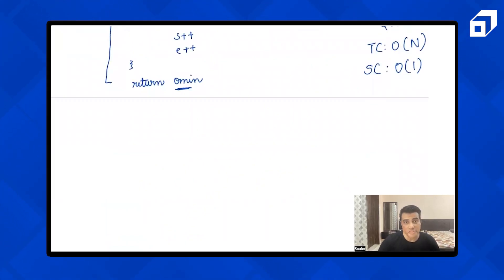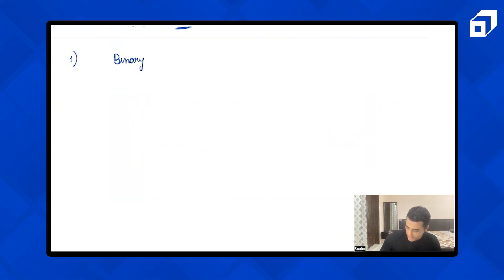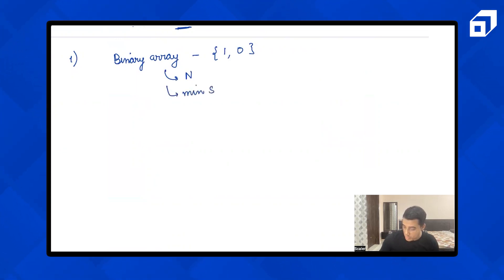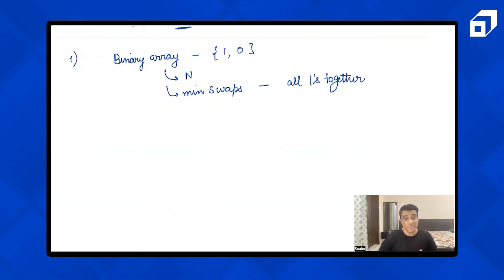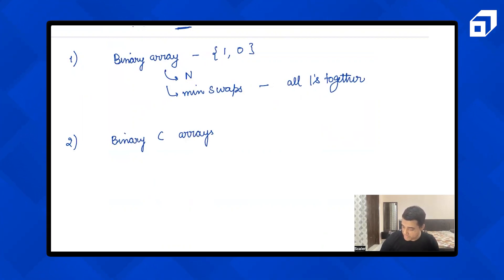Now let's look at two homework problems. The first: given a binary array of length n containing only 0s and 1s, find the minimum number of swaps to bring all ones together. This is very similar to the question we just solved. The second is an extension: given a binary circular array, find the minimum swaps to bring all ones together.